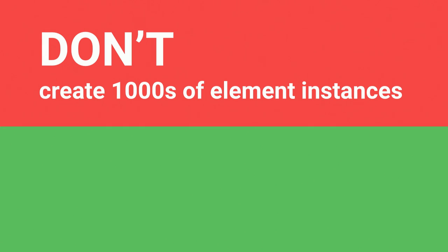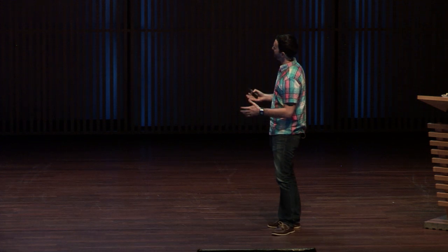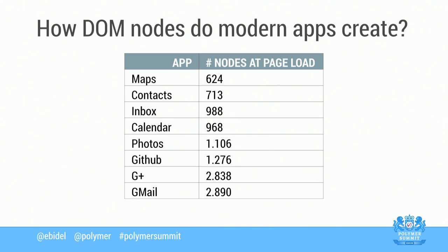Don't create thousands of elements on your page — you wouldn't do this outside of Web Components, so don't do it with Web Components. Do lazy-render elements instead. An audit of modern apps like Google Maps, Contacts, Inbox, Calendar, and GitHub shows they create a minimal number of DOM nodes at page load — Maps, for instance, creates only 624 nodes at load, then generates more as the user interacts.